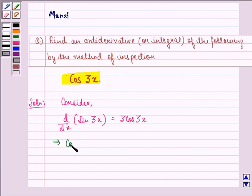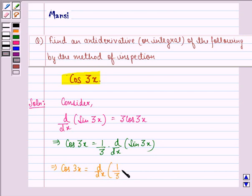This implies that cos 3x is equal to 1/3 times d/dx of sin 3x. This implies that cos 3x is equal to d/dx of 1/3 sin 3x. Since 1/3 is a constant, we can easily take it inside d/dx.